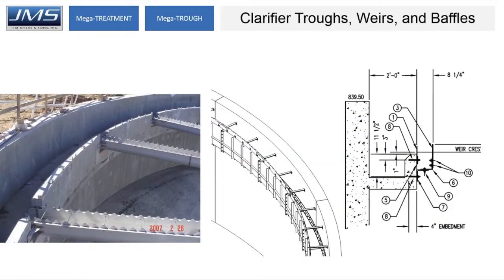We can supply multiple different configurations of trawls in circular clarifiers. Over here to the left we have radial trawls. In the middle we're showing stainless steel or aluminum trawls around the perimeter, and on the right we're showing weir and baffle where there happens to be a concrete trough.